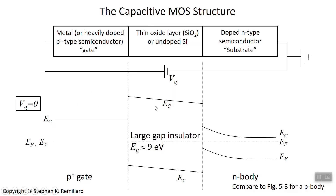I'd urge you to compare this diagram to figure 5-3 in the textbook. Here we're doing an n-type substrate, while figure 5-3 does the same thing with a P-type semiconductor for the body. You really need to know both types, so study this and figure 5-3 together — put them both in front of you so you can see the distinct differences and similarities.